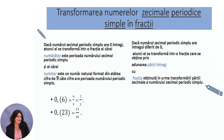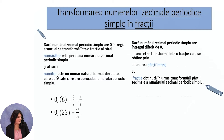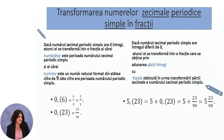If the simple periodic decimal number has an integer part different from 0, it transforms into a fraction obtained by adding the integer part to the fraction obtained by transforming the decimal part. For example, 5.(23) equals 5 plus 0.(23), which transforms into 5 plus 23/99, equaling 5 and 23/99.